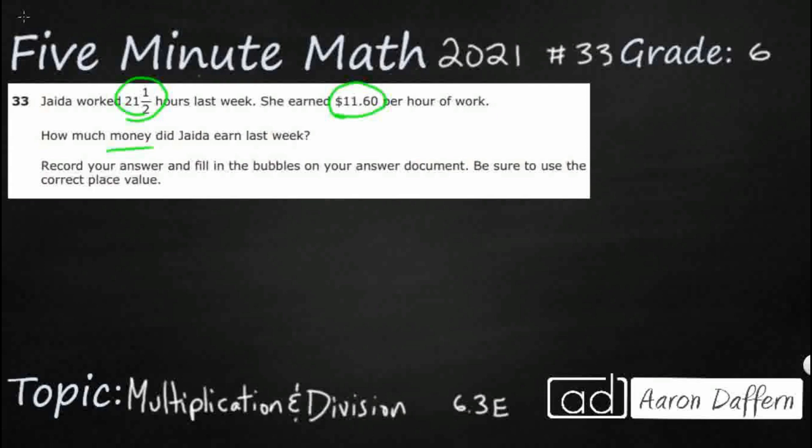Only problem is we have a mixed number here, and we've got a decimal here. It's going to be a little bit easier if we make them both either decimals, or we make them both mixed numbers. Since we are dealing with money, let's go ahead and turn them into decimals, because that's how we represent our money is with decimals.